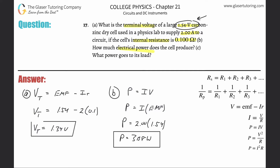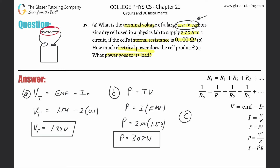Letter c asks: what power goes to its load? That's the power not used internally to overcome internal resistance — the power actually usable by an appliance connected to the battery. Think of a 9-volt battery with two terminals: the terminal voltage between those terminals is the actual energy available to the appliance. A little bit of the battery's total EMF of 1.54 volts had to overcome the internal resistance of 0.1 ohms.